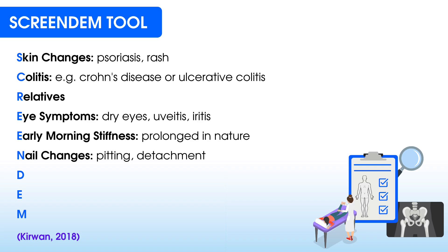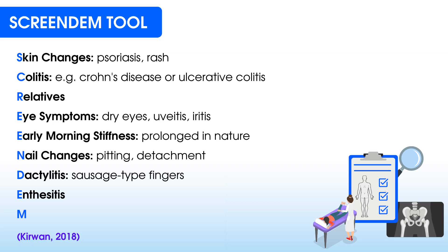N stands for nail changes, where patients might have pitting of their nails or detachment of the nail from the nail bed. D stands for dactylitis, where patients may present with a sausage-type appearance to their fingers — very round and very swollen. The final E stands for enthesitis. Remember, spondyloarthritis commonly presents at the entheses — the areas where tendons, ligaments or joint capsules attach to the bone — so we're specifically looking for pain around tendon or ligament insertions.